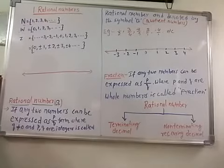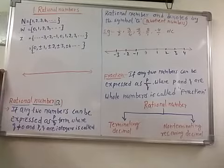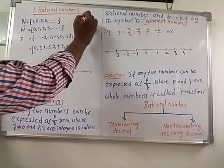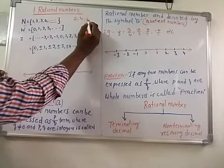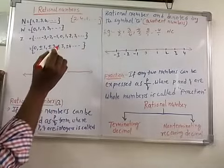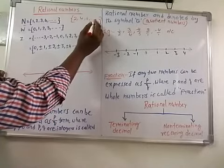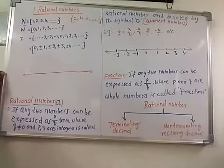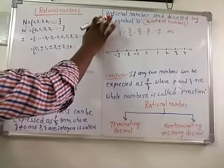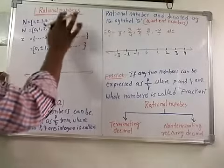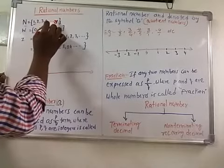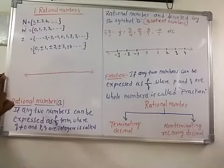The 'and so on' is always represented by three dots only. For example, the set of even numbers is {2, 4, 6, ...}. In natural numbers, the least natural number is 1, and there is no largest natural number.